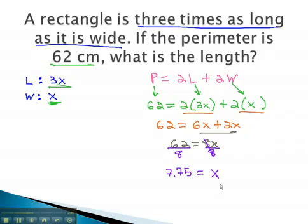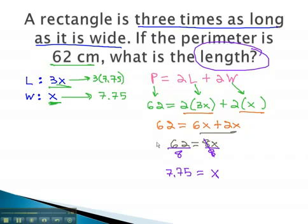However, we must remember that the question is asking about the length. The measurement we just found was the width, x equals 7.75. The length will be 3x, or 3 times 7.75. 3 times 7.75 gives us the length is equal to 23.25 centimeters.